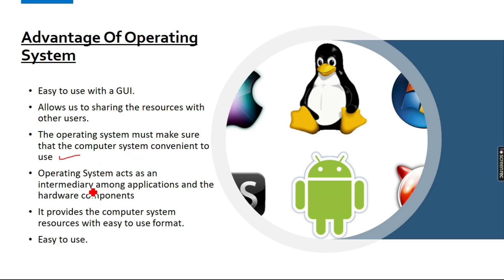The operating system acts as an intermediate between applications and the hardware components. It manages how the user interacts with the computer system. If you have to run an application, the operating system provides the interface between the application software and the hardware, so users can use the computer easily.